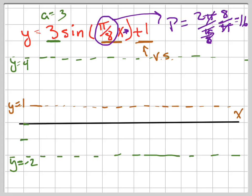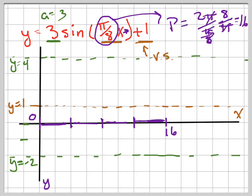I can go ahead and draw in my y-axis already. Now I'm going to go 1, 2, 3, 4 — there are my 4 equal segments. This is going to be 0, because I'm not shifting it anywhere, and this is going to be 16. Half of 16 is 8, half of 8 is 4, and 4 plus 8 is 12. So that's actually pretty easy.